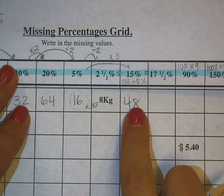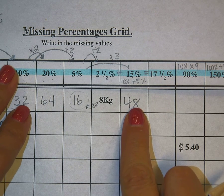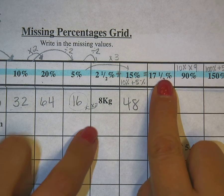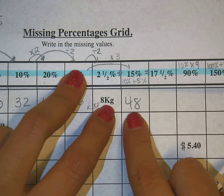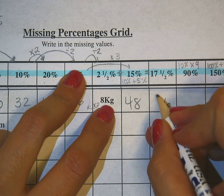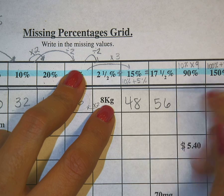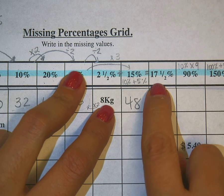So then now to find my 17 and a half, all I have to do is add these two together. So 8 and 8 is 16, carry the 1 is 56. That's my 17 and a half percent.